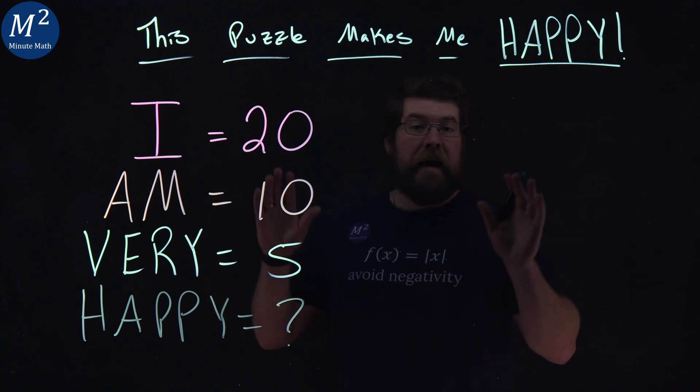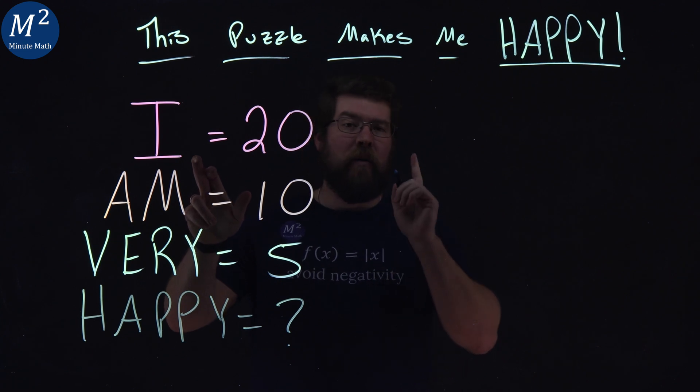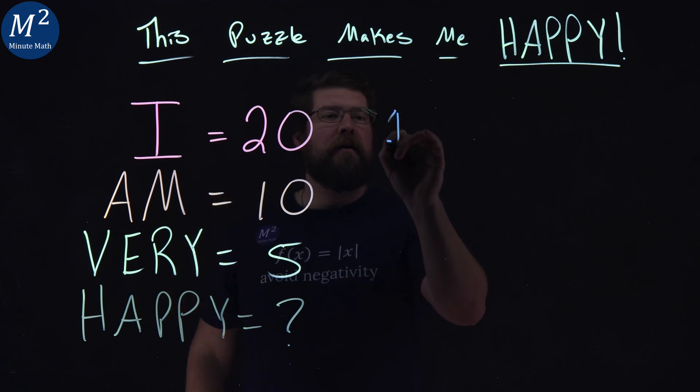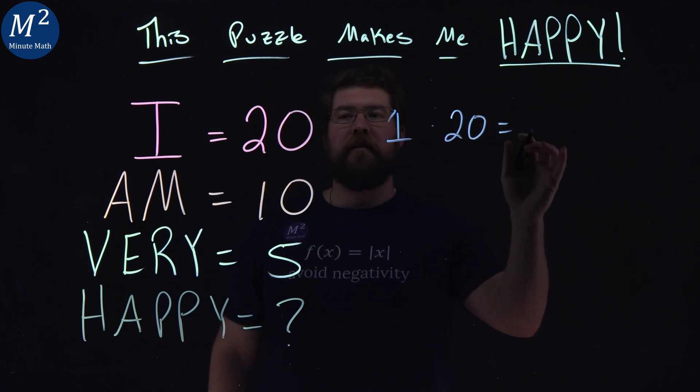All right, here it is. Not 2.5. I has, well, one letter in it. One letter in the word I. One times 20 gives me 20.